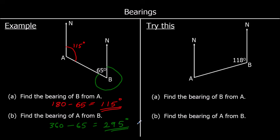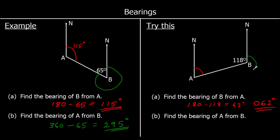One for you to try. Part A: the bearing of B from A — starting at A, going to B, measured from north clockwise. Co-interior angles add up to 180, so 180 take away 118 is 62 degrees. But remember, bearings must be given as three figures, so we write 062 degrees. Part B: find the bearing of A from B — start at B, from north, going clockwise. Angles around the point add up to 360, so 360 take away 118 is 242 degrees.